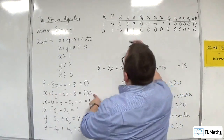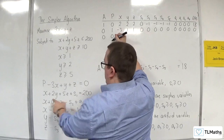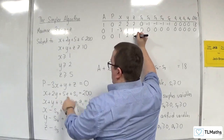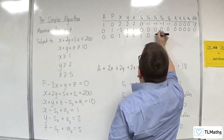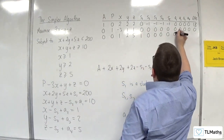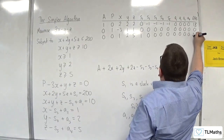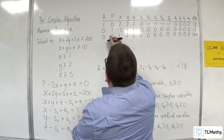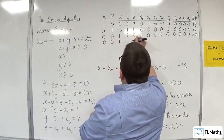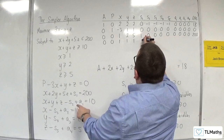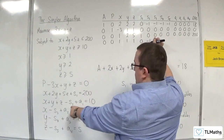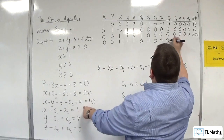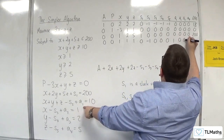Then the row for the first constraint: 0, 0, 1, 2, 5, then 1, then the rest are zeros, right-hand side 200. Then for the second constraint: 0, 0, 1, 1, 1, then 0, minus 1, then zeros, right-hand side 10.